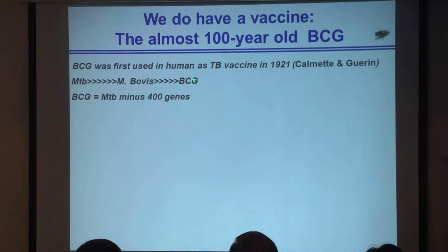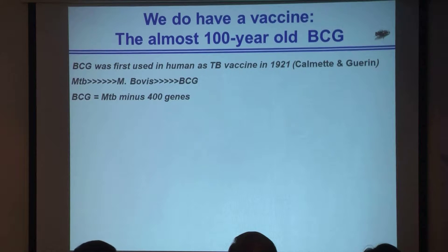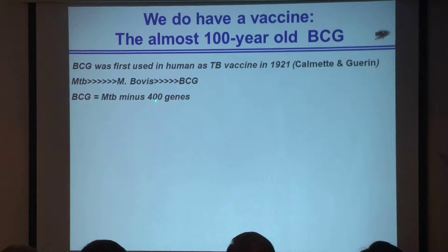BCG was developed at the Institut Pasteur in France by two scientists, Calmette and Guérin. It was an accidental attenuation of Mycobacterium bovis, which itself derived from MTB through a long process of deletion of pieces of genes. The difference between BCG and MTB is the loss of about 400 genes. What is not visible through sequencing is that genes present in BCG that are common to MTB are simply not expressed, because when BCG evolved from MTB it lost different components of its secretion mechanism — the gene is inside BCG, but no protein is expressed outside.